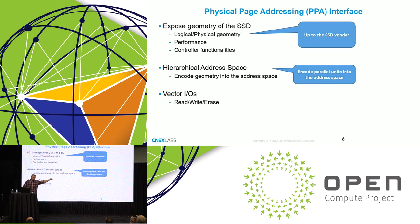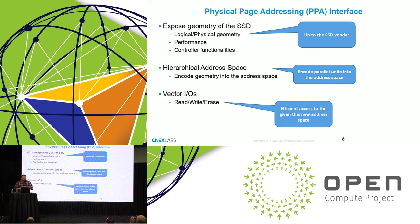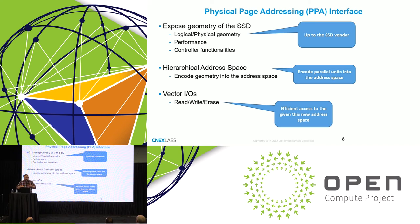Instead of exposing the linear address space of a traditional SSD, we expose each parallel unit individually. You can write to one unit, but you can also access multiple of them in parallel — that's where you get the throughput. To enable that, we have a new interface where you read, write, and erase, and you can access multiple addresses in this address space in parallel. Instead of a standard LBA read or write with an LBA plus a length, you can request data from multiple dies simultaneously and bring it back in one command — so instead of issuing three IOs, you can do it with one IO.